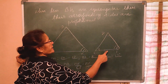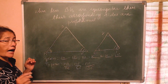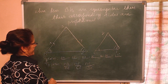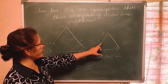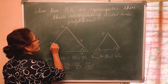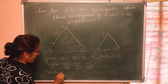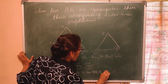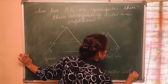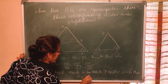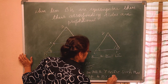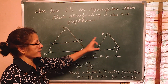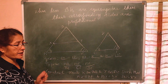Construction: Mark point X on AB and point Y on AC such that AX = DE and AY = DF. Join XY. This is the construction we do for the proof.